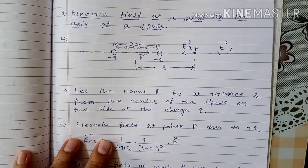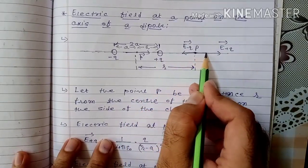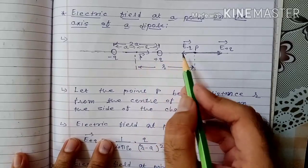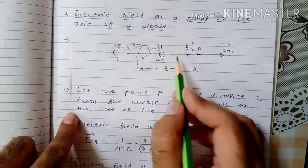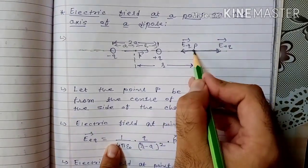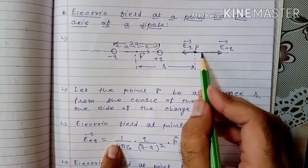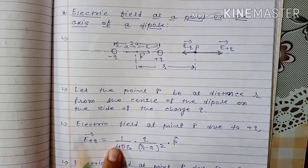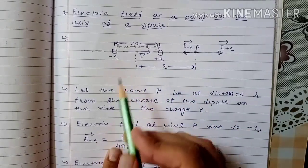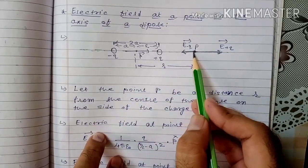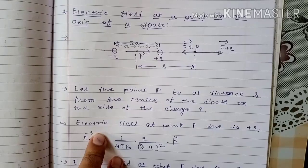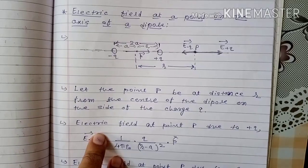The electric field due to plus q is directed away from the charge, that is towards the right. The electric field due to negative charge is always towards the negative charge, so it is directed towards the left. Since point P is closer to plus q than to minus q, the electric field due to plus q will be more. Therefore the net electric field will be in the direction of the larger field, which is towards the right.